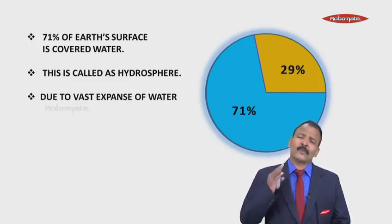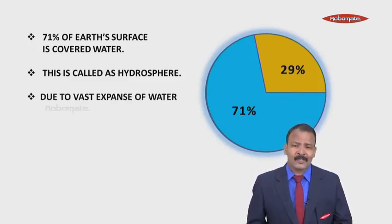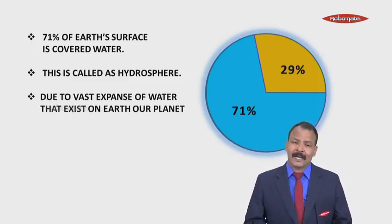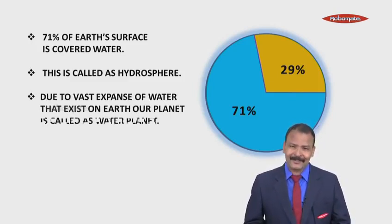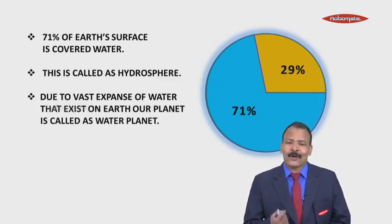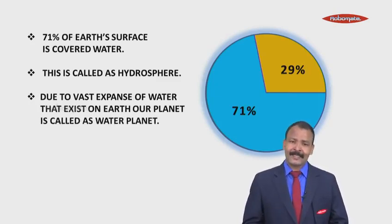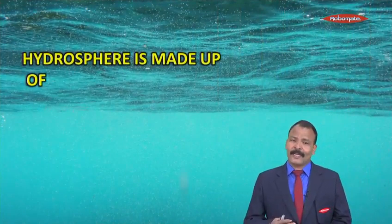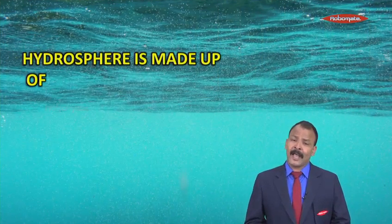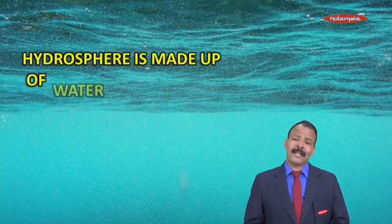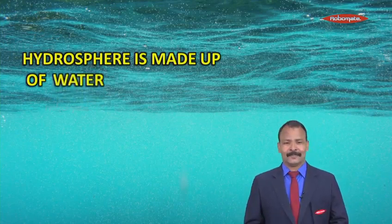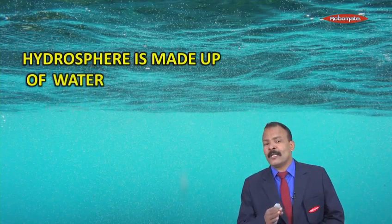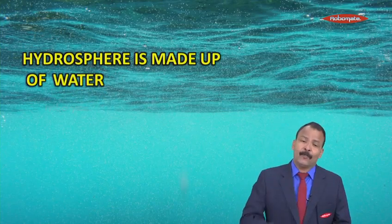Due to this vast expanse of water that exists on the Earth, our planet is called the water planet, and we also call it the hydrosphere. Hydrosphere means it is made up of water. Now let's understand the water bodies that are seen on planet Earth.